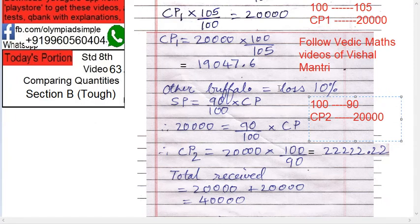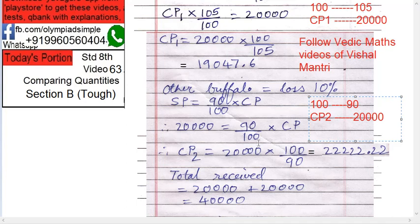Now for the other buffalo with a loss of 10%. If I bring that buffalo for 100 rupees, I'll have to sell it at 90. So at what price should I bring the second buffalo to sell it at 20,000 with a 10% loss? CP2 into 90 equals 20,000 into 100. So CP2 equals 20,000 into 100 upon 90. Follow this logic — it's easier.